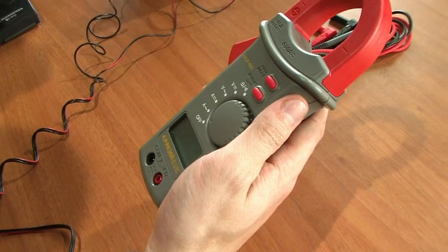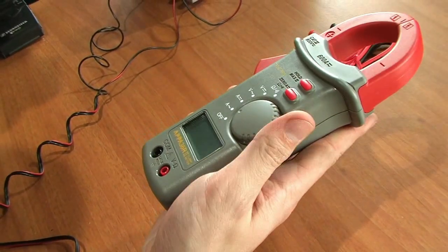Depending on modification, clamp meters can measure strength of both direct current and alternating current.